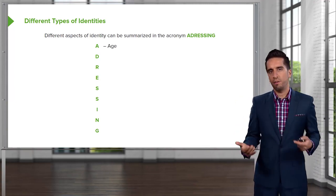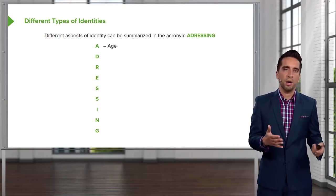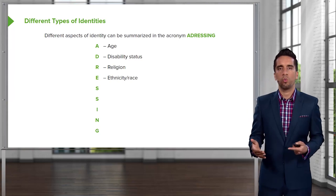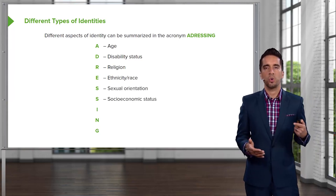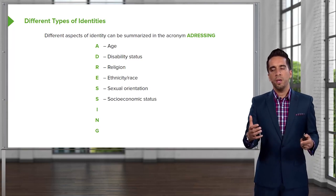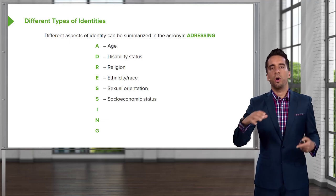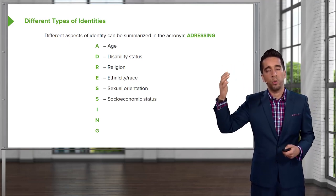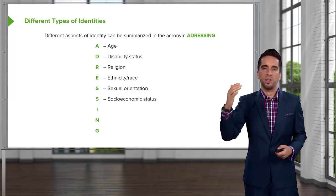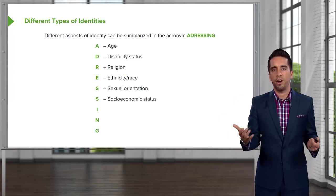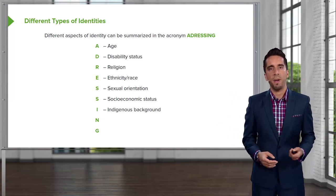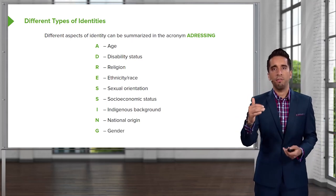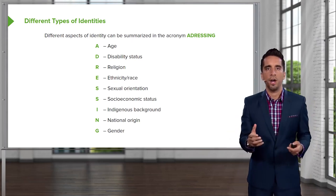One of the first things that will help identify you is your age — are you really young, really elderly, or somewhere in the middle? Then disability status, religion, ethnicity or race, sexual orientation, socioeconomic status — which refers to where you fall on the ladder of society: are you a blue-collar worker with minimal education, somewhere in the middle, highly educated, professional, or more affluent? Finally, indigenous background, national origin or nationality, and gender — all of these have a key role in helping describe and define your identity.